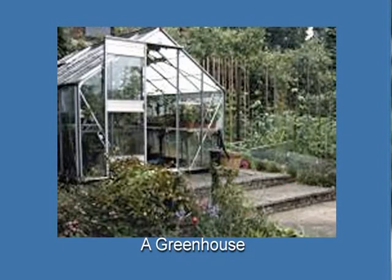As you see in the picture, this is a greenhouse built in a garden where plants will be nourished according to our need. Inside the greenhouse, we can regulate temperature, humidity, soil moisture, and light.